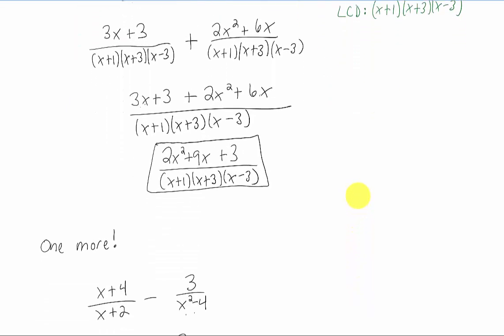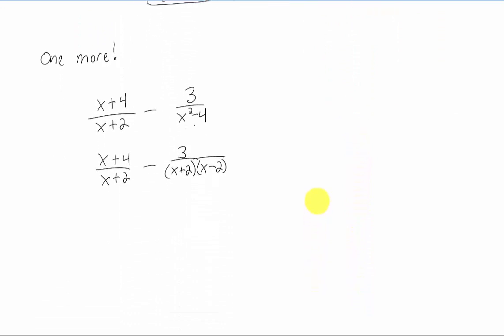We're going to do a bunch of these in class but let's do one more in the video. If we have two rational expressions that don't have the same denominator, we can start by factoring. We can't factor this first term but the second one does because of this difference of squares.